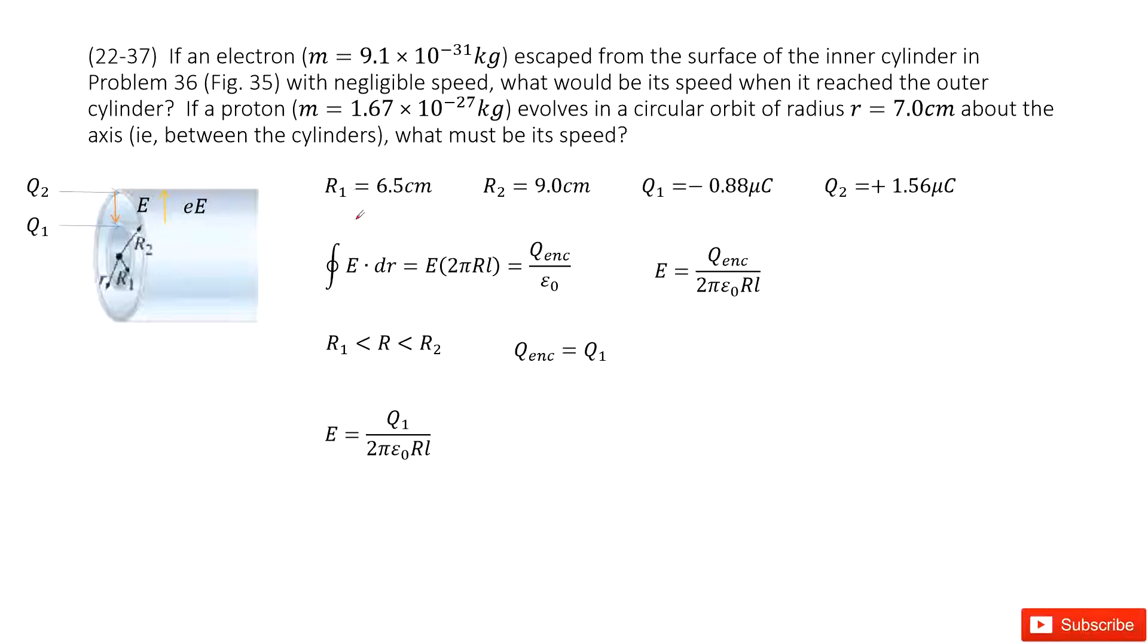We can see in this system we have two cylindrical shells, the inner radius R1 and outer radius R2. Initially we put an electron at the inner surface. It moves to the outer surface, so we need to find its final speed. For this case we can see the outer shell carries a positive charge. Inner shell carries a negative charge. This is the following problem from problem 36.